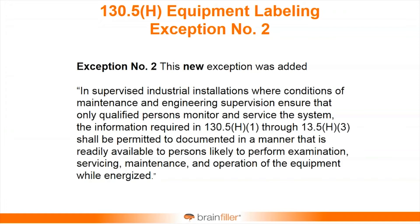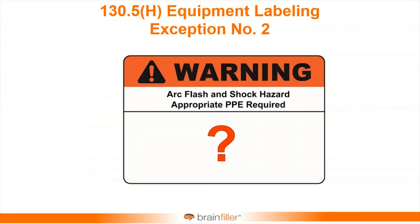The new exception simply states: in supervised industrial installations, with conditions of maintenance and engineering supervision, and where qualified persons are the only ones working on the system, the information in H1 through H3 — that's the voltage, the arc flash boundary, and the PPE — can be documented and made readily available to people performing energized work. The concept is you don't have to put anything on your label.